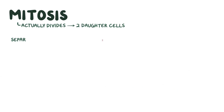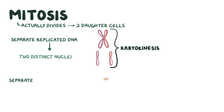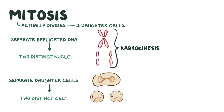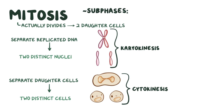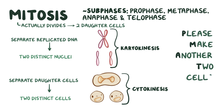Mitosis is when the cell actually divides into two daughter cells, and it involves separating the replicated DNA into two distinct nuclei — a process called karyokinesis — and the actual separation of the daughter cells into two distinct cells, a process called cytokinesis. Mitosis can also be broken down into four subphases. In order, these are prophase, metaphase, anaphase, and telophase, and they are immediately followed by cytokinesis. You can remember this with the mnemonic: please make another two cells.